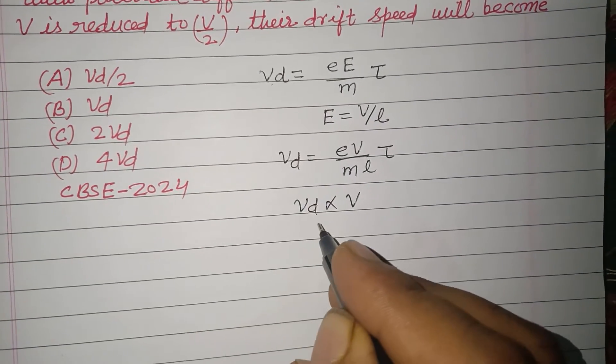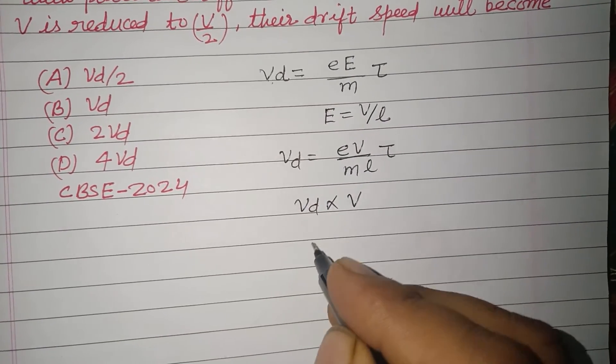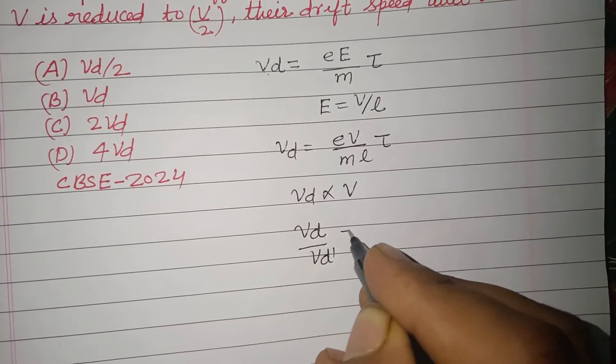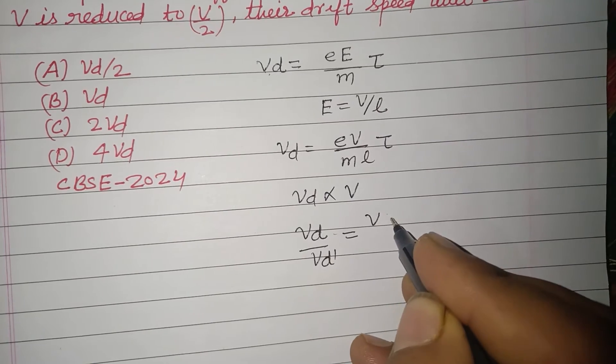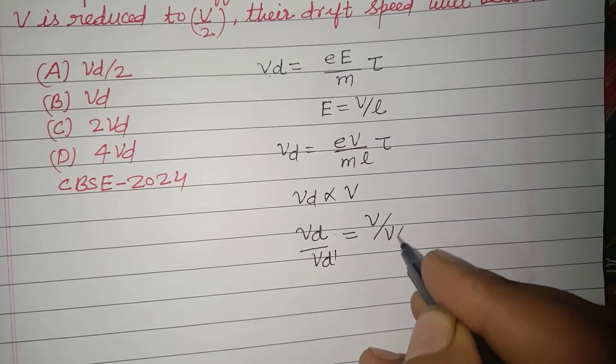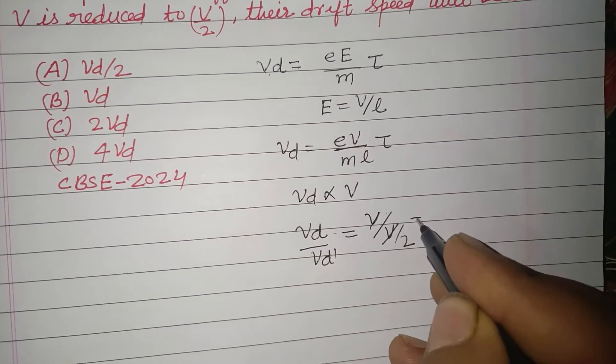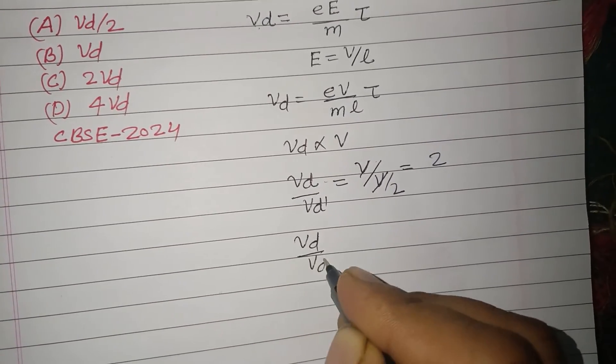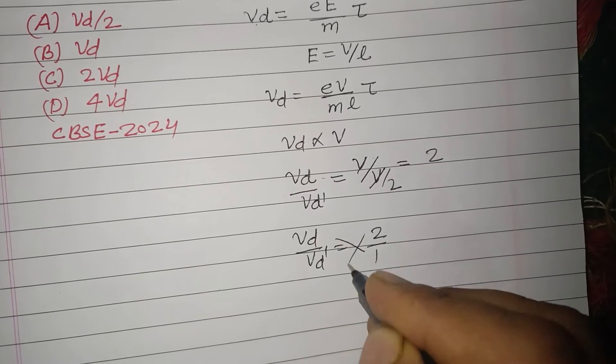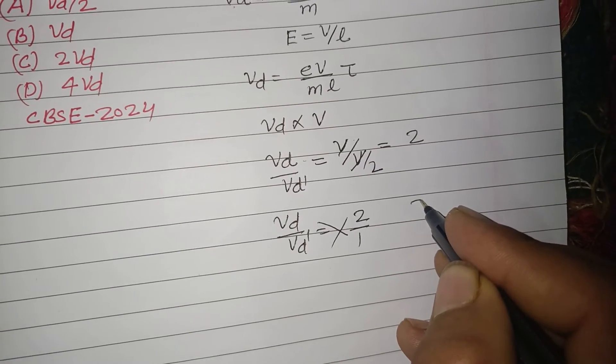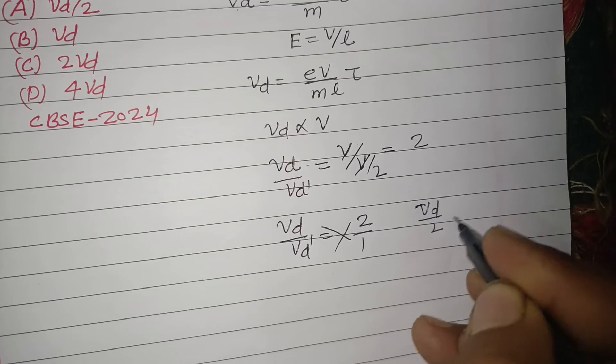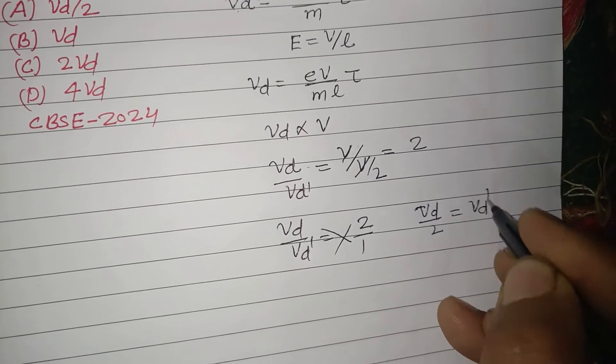In first case when VD over VD dash, in first case V is V and in second case V is V by 2. So V we cancel, we got 2. So VD upon VD dash equal to 2. On cross multiplication we got VD by 2 equal to VD dash.